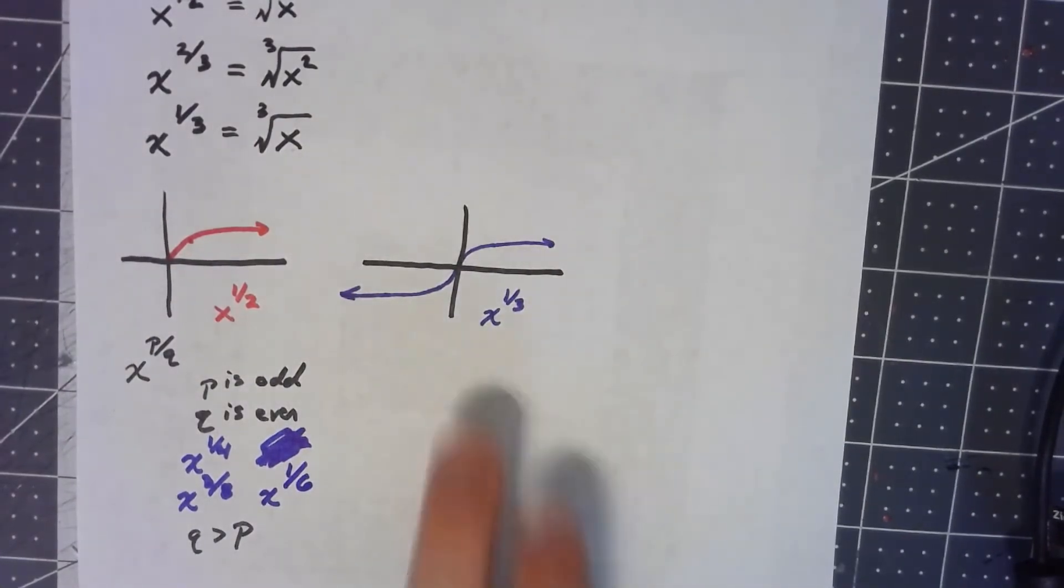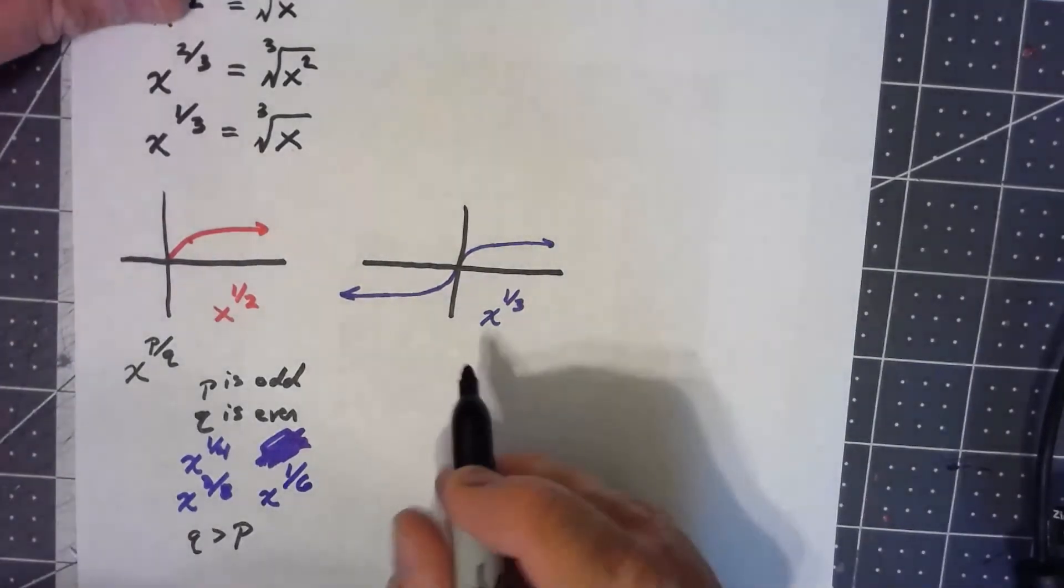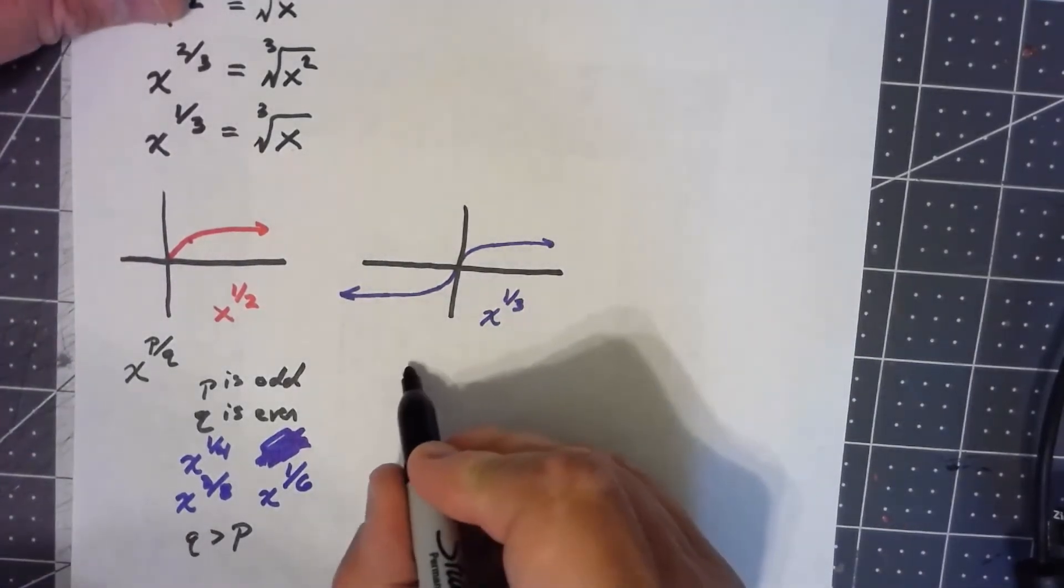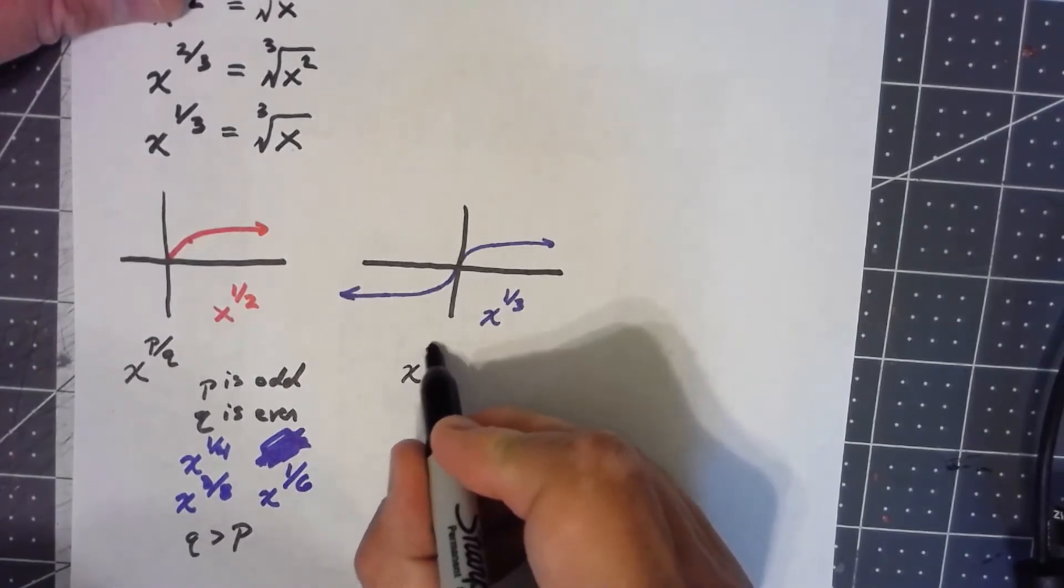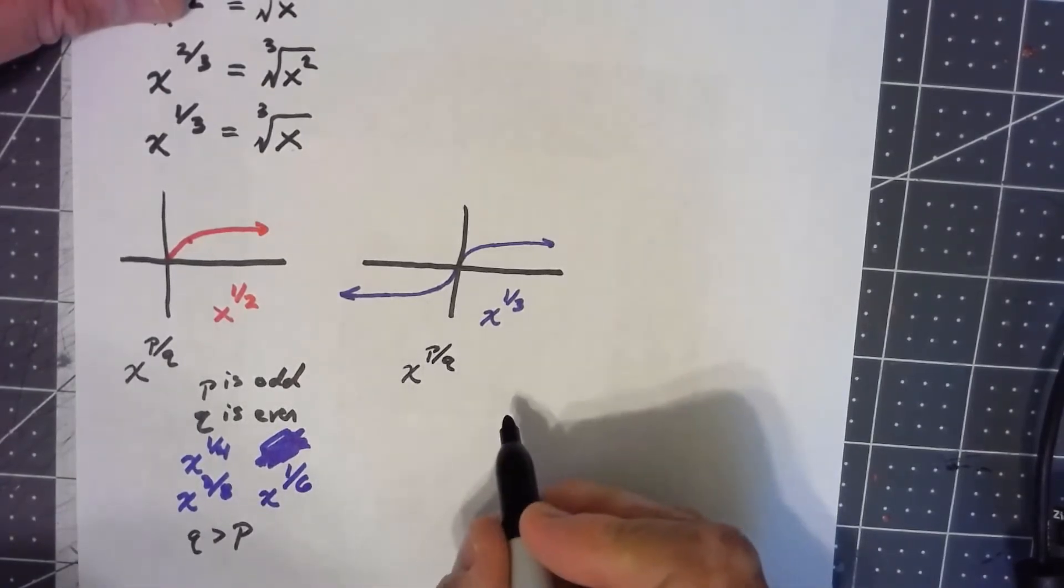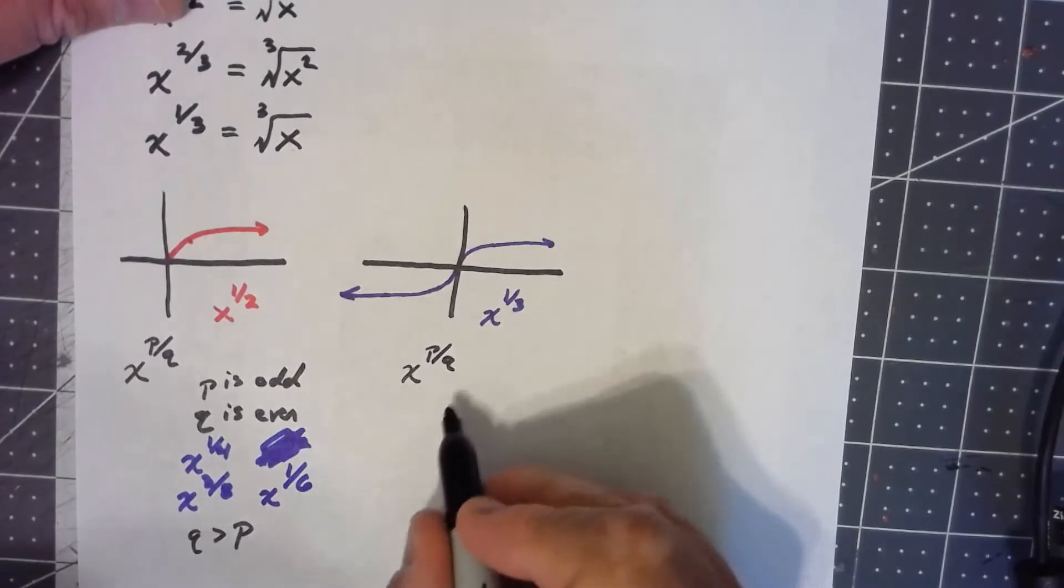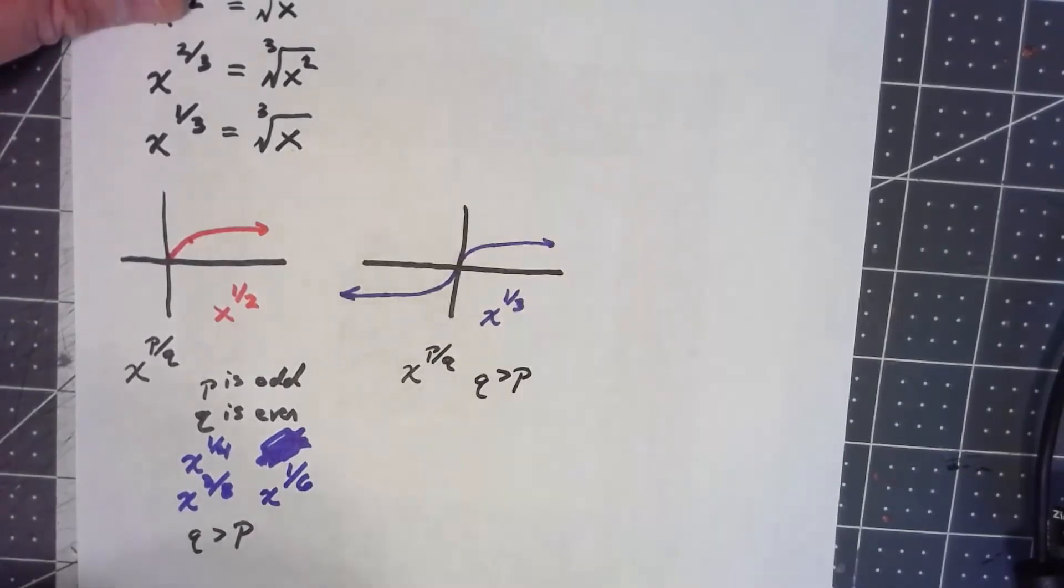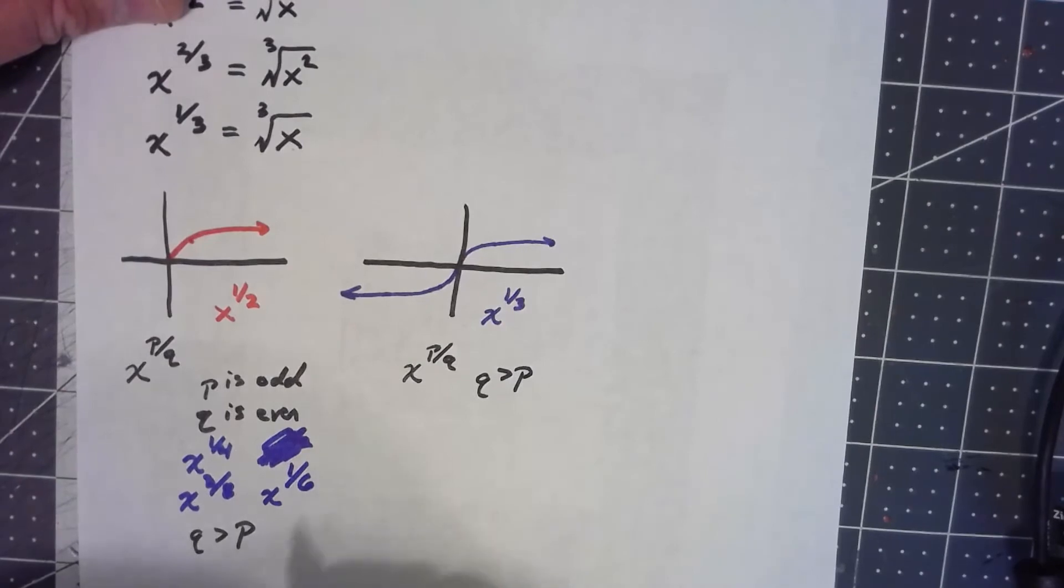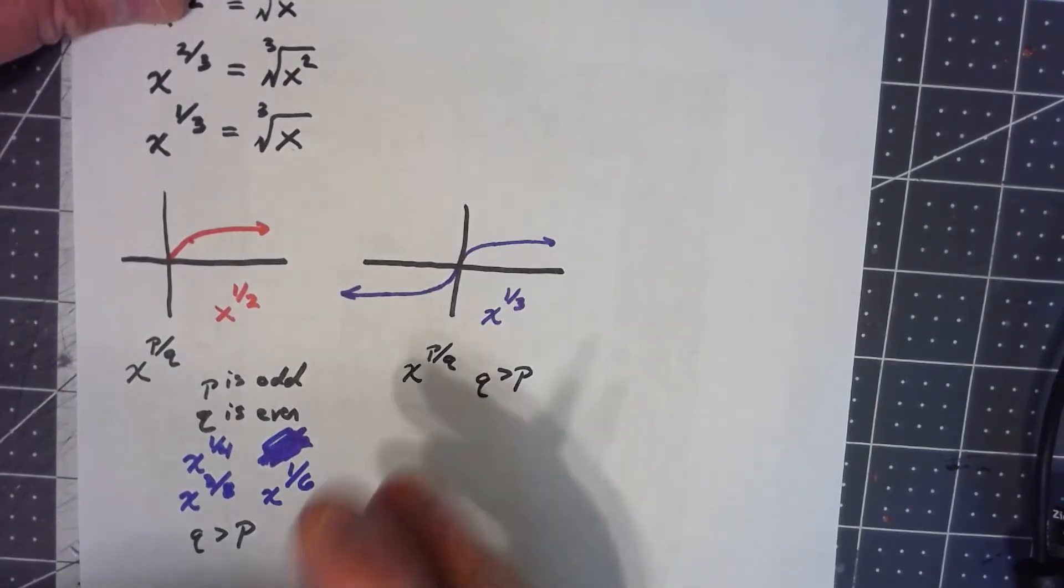This one here, it's the same kind of thing anytime I've got something where I've got x to a fraction and the bottom's bigger than the top. And this one is that both the top and the bottom are odd.